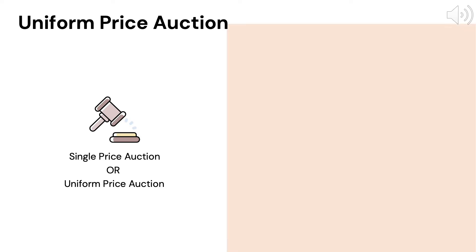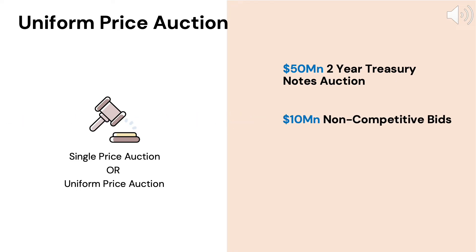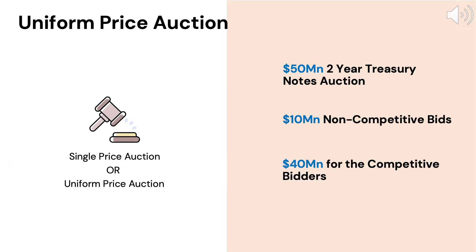Let us look at an example to see how it works. Let us say the Treasury announces the auction of $50 million of two-year Treasury notes and receives $10 million of non-competitive bids. That leaves $40 million to be awarded to the competitive bidders.